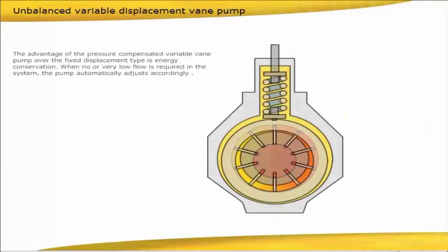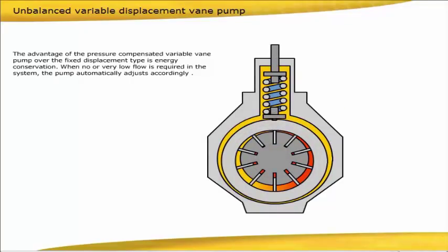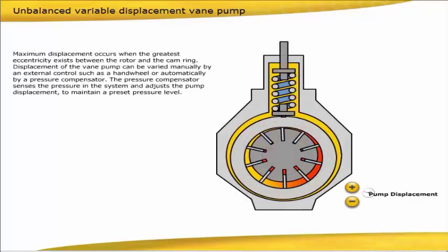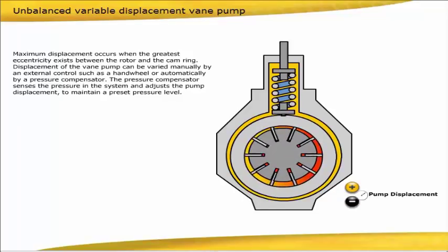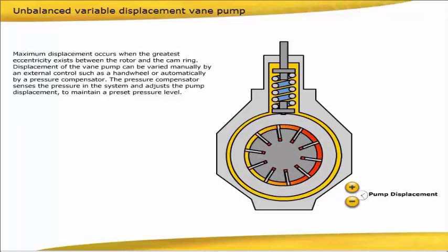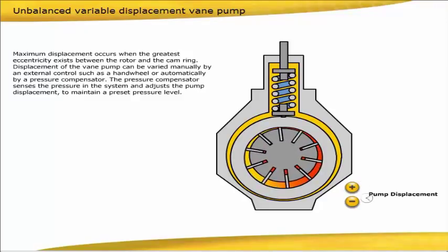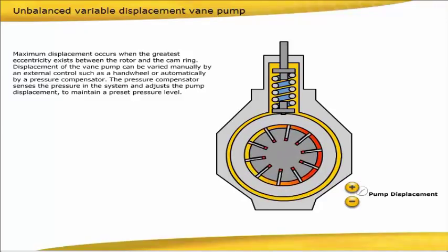The advantage of the pressure-compensated variable vane pump over the fixed displacement type is energy conservation. When no or very low flow is required in the system, the pump automatically adjusts accordingly. Maximum displacement occurs when the greatest eccentricity exists between the rotor and the cam ring. Displacement of the vane pump can be varied manually by an external control, such as a handwheel, or automatically by a pressure compensator. The pressure compensator senses the pressure in the system and adjusts the pump displacement to maintain a preset pressure level.